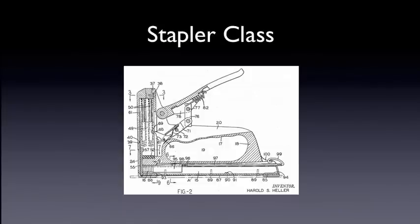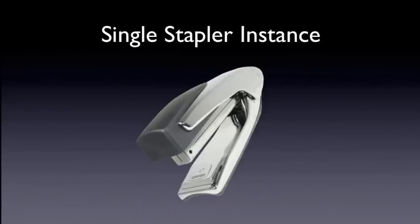Everything in Java is technically an object, but hold off on that idea for now. So when we build a scanner object, we're pulling the blueprints on the scanner object and then actually building one. When we call new on the stapler class, it actually goes out, builds a temporary little factory, generates a stapler, and voilà — we now have an actual stapler we can use. The idea here is that once we've defined the blueprints, we can generate, using the new operator, a single instance of the stapler class.